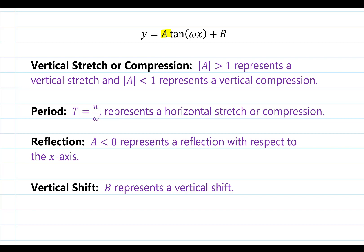To find the vertical stretch or compression, you need to take the absolute value of a. If the absolute value of a is greater than 1, it represents a vertical stretch. If the absolute value of a is less than 1, it represents a vertical compression.